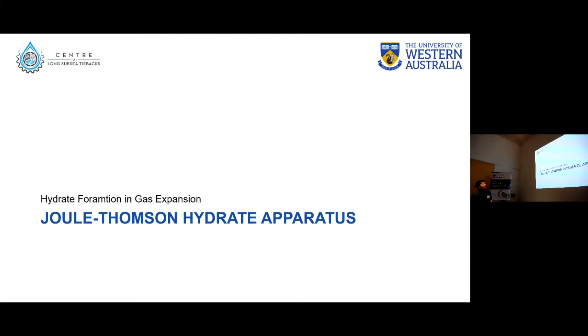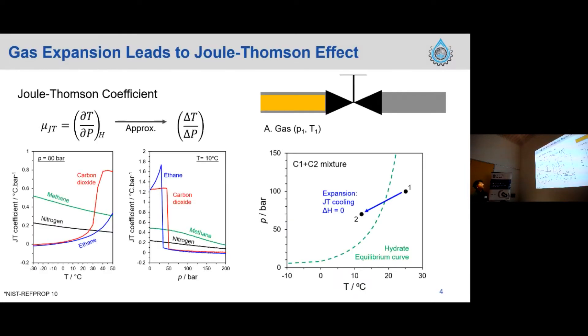Starting with some background of the Joule-Thomson effect and my experimental work. The Joule-Thomson effect is an isenthalpic process, and to characterize this we can find the temperature difference over the pressure gradient. With this simple animation, we have the gas state at P1 and T1, and when the gas flows through the expansion valve, the pressure drops and we expect cooling here.